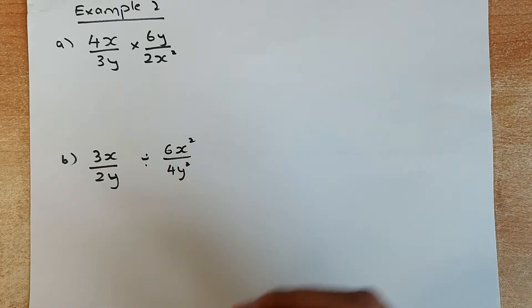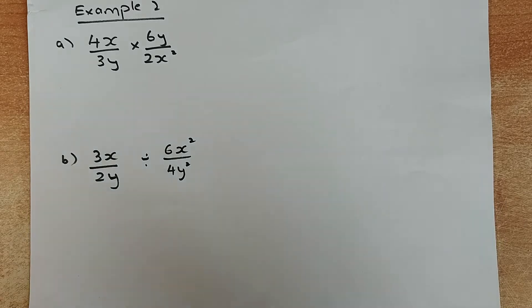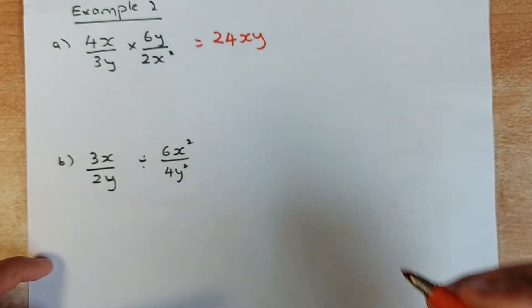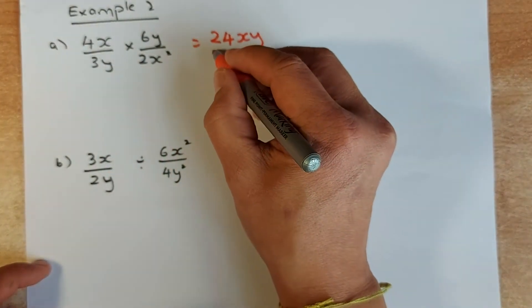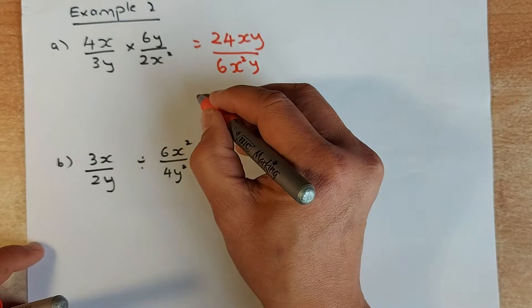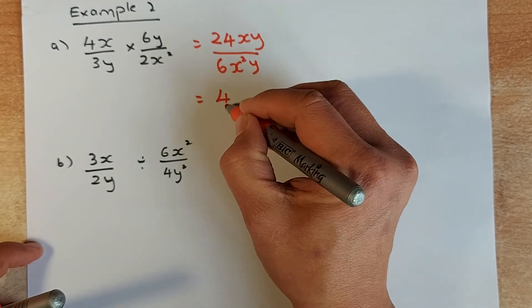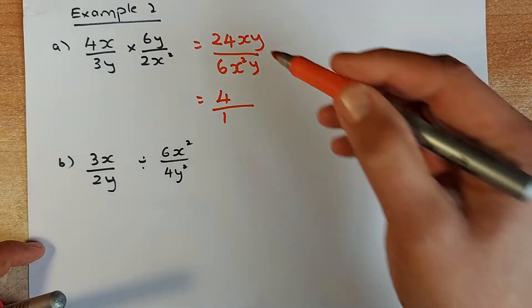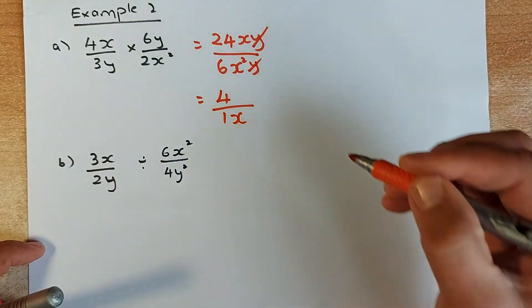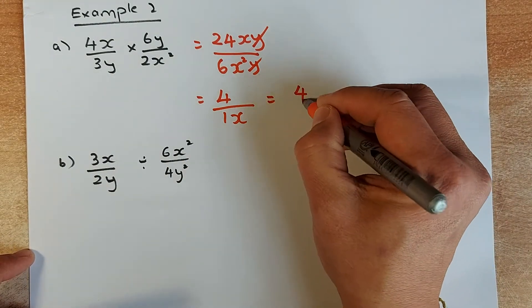Now we are going to look at how to multiply an algebraic fraction. You multiply the numerator with the numerator and the denominator with the denominator. So 4x multiplied by 6y is 24xy, and the denominator 3y times 2x squared is 6x squared y. But you still have to simplify: 24 divided by 6 is 4, x over x squared leaves 1x at the bottom, and y and y cancel out. So the answer is 4 divided by x.